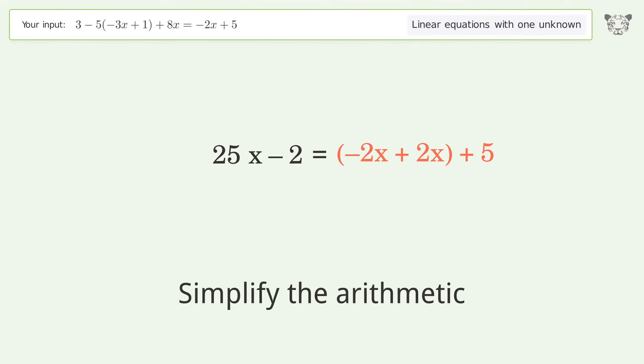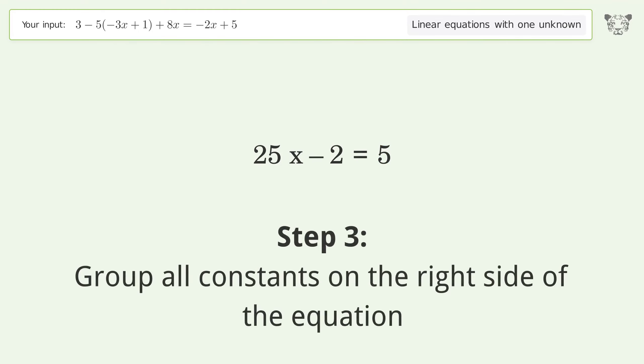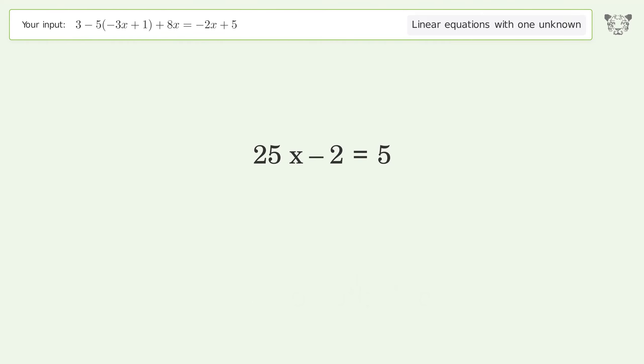Group like terms. Simplify the arithmetic. Group all constants on the right side of the equation. Add 2 to both sides. Simplify the arithmetic.